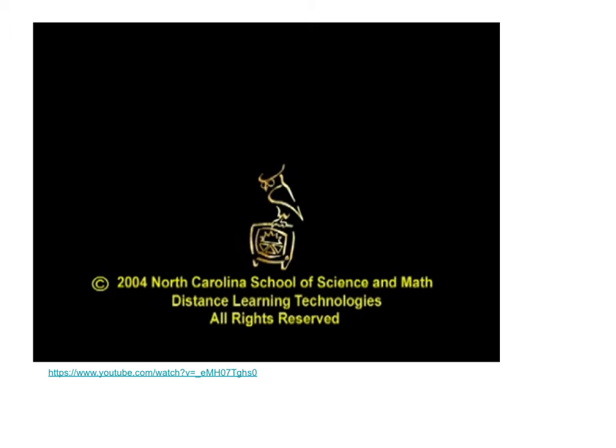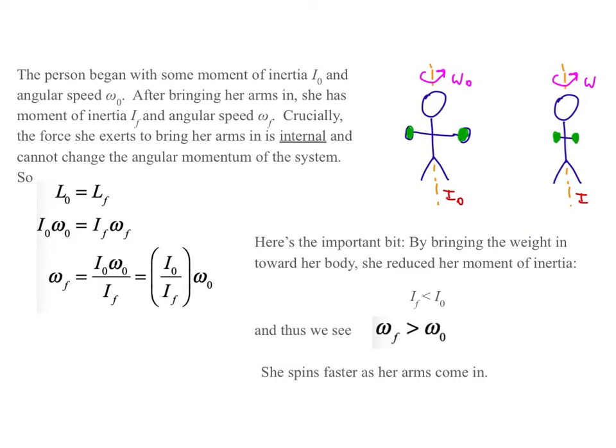This is an effect used to good advantage by ice skaters in the high-velocity spins they achieve. They start their spin fairly slowly, but then bring their arms and legs in very tightly, and that makes them spin at a very high rate. To sketch this out: the person begins with moment of inertia I₀ and speed ω₀. After bringing her arms in, she has moment of inertia I_F and angular speed ω_F. The force she exerts to bring her arms in is internal and therefore cannot change the angular momentum of the system. So I₀ω₀ = I_Fω_F, meaning ω_F = I₀ω₀ / I_F — the initial speed times the ratio of moments of inertia. Since I₀ is bigger than I_F, ω_F must be bigger than ω₀.